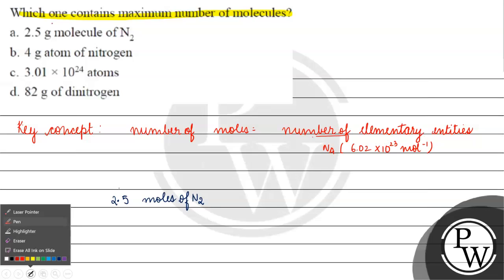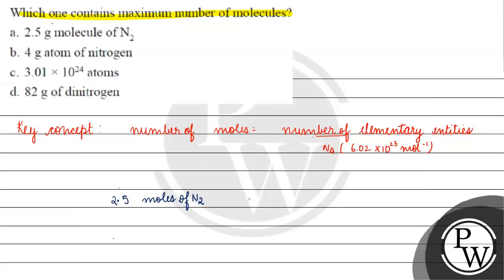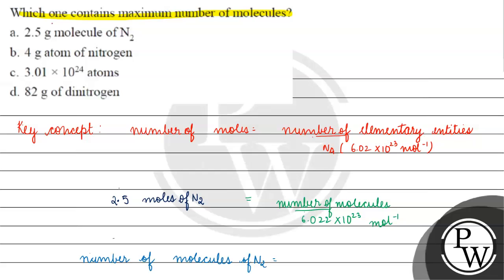So if we apply the formula — number of moles equals number of molecules divided by Avogadro's number — the number of molecules of nitrogen for Option A is basically equal to 2.5 into Avogadro's number (Nₐ).